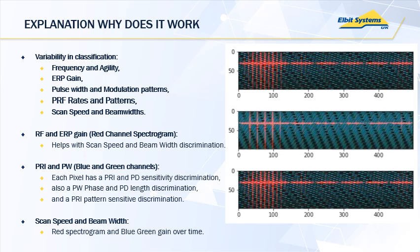From the dataset we saw originally, there was variability in the classifications in frequency agility, gain, pulse width, and PRI modulations, as well as scan speed and beam width variations between categories. We might expect that RF and gain parameters are being captured in the red channel for discrimination, helping with scan speed and beam width discrimination. The PRI and pulse widths are being captured in the green channel, where individual pixels may have sensitivity to different PRI and pulse widths, their lengths and patterns, all contributing to discrimination.